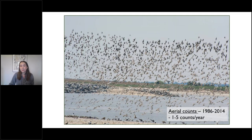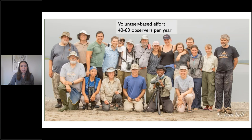The aerial counts began in the late 80s and ended in 2014. A fixed-wing airplane is flown low over the entire bay shore; as the plane approaches, birds flush up into large flocks and observers attempt to count each species present. All of this data collection is largely volunteer-based. In any given year, between 40 and 63 different people help collect data, and there are a number of long-term volunteers who stay for the whole season and have been doing so for 10 or 15 years.